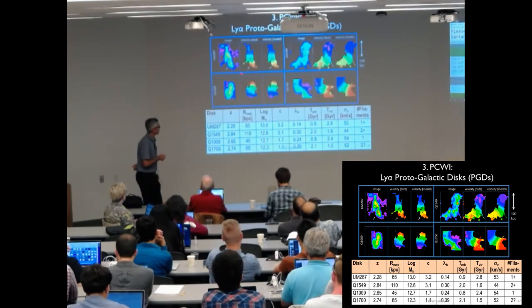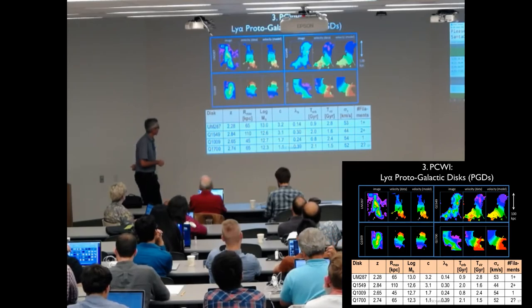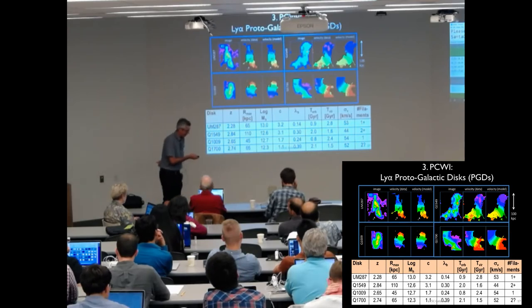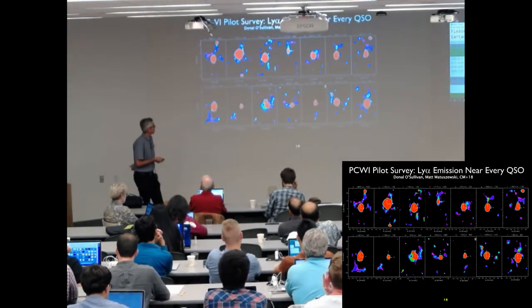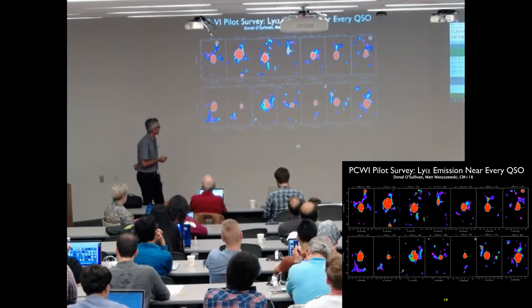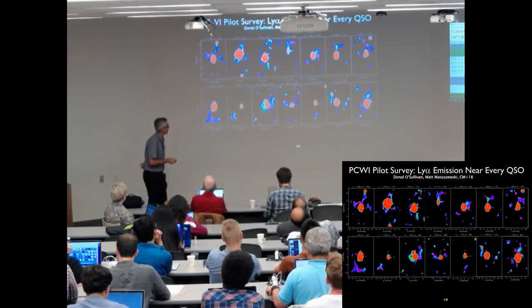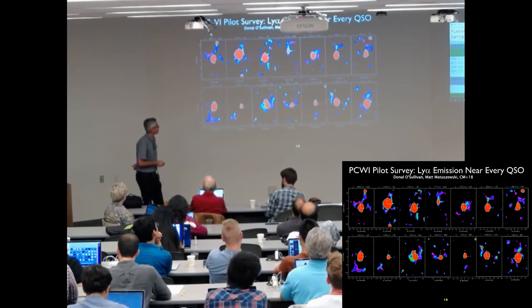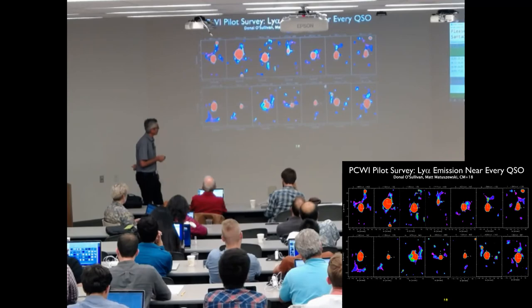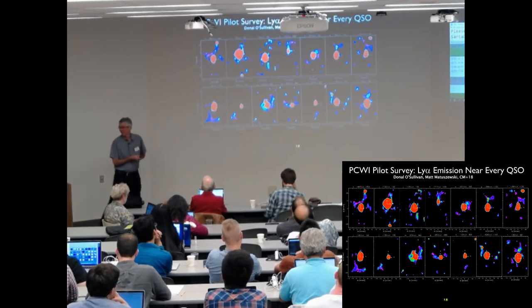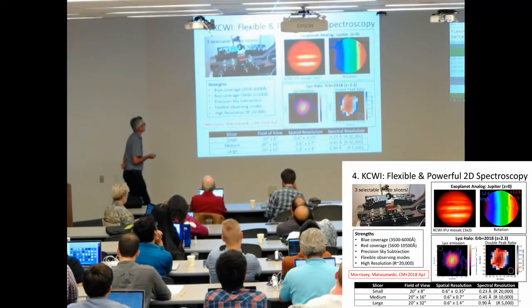So all of these objects I'll be showing you in a few minutes are like that. Here are four of those that were discovered by PCWI, and you can infer some parameters. Large masses, they're all redshift 2 to 2.5 to 3. In the interest of time, I'll go straight to the KCWI results. We're also doing a survey with PCWI in order to find quasars with emission. And basically, this has also been found by MUSE, all quasars show emission around them.